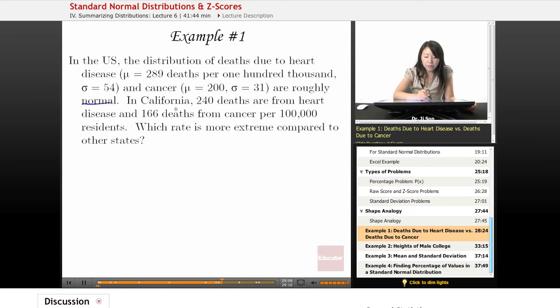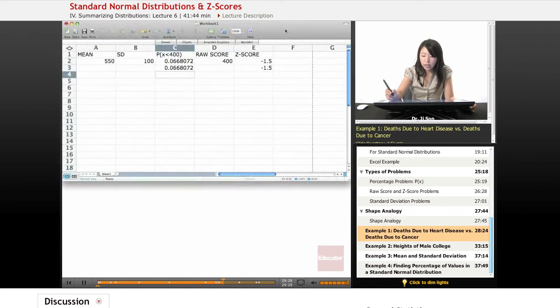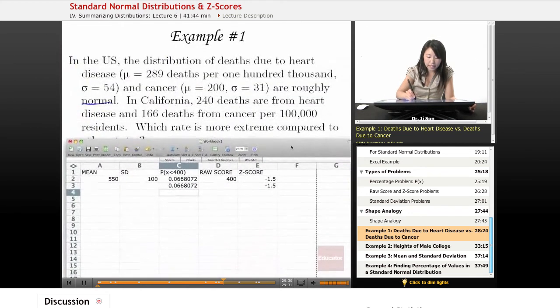So we have California's death rates from heart disease and its death rates from cancer. And we want to know which of these are really extreme. One way that we could find out is by finding out the Z-scores. I'm going to get my Excel out.